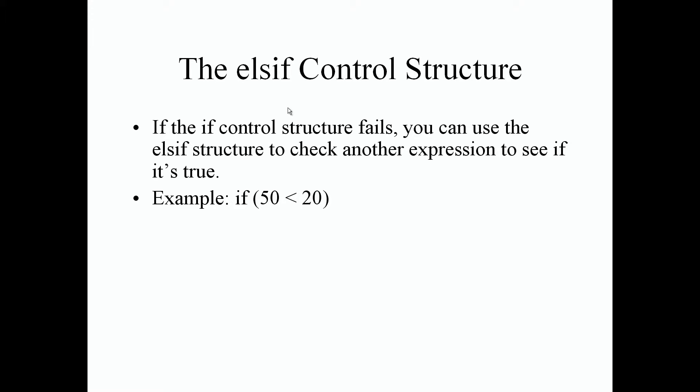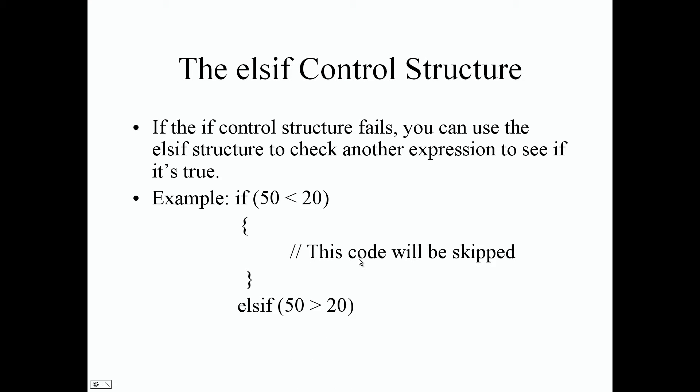For example, if 50 is less than 20, which is false, it skips that block of code. It then goes down to the elsif statement — is 50 greater than 20? That is true, so it prints '50 is greater than 20'. Let's do some examples now.